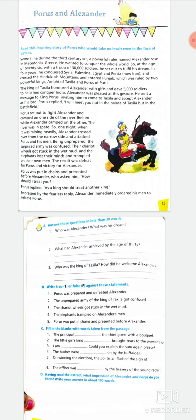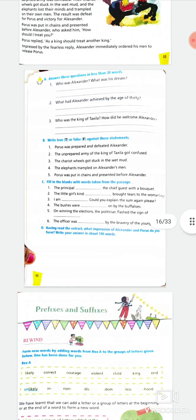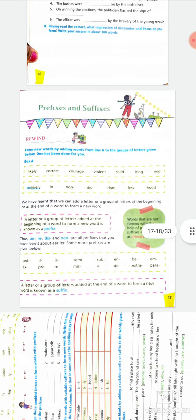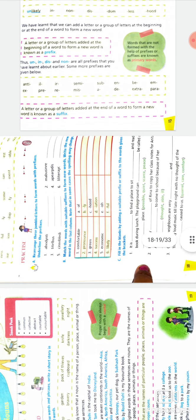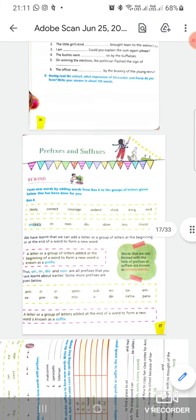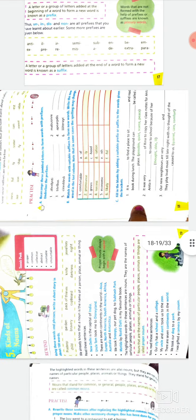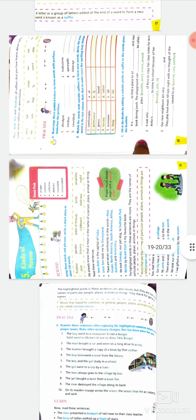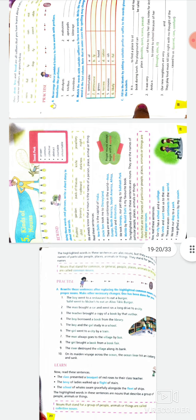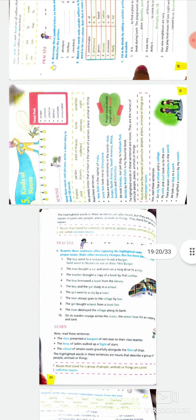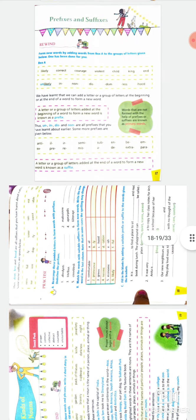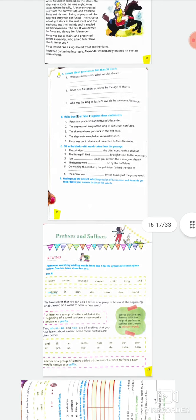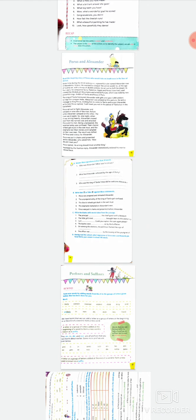Lesson five, 'Porus and Alexander,' is just a case study — you have to read the paragraph and answer the questions. We are done till the fifth lesson. All the best for your test! The next video will cover lessons five, six, and seven, but first make these four lessons perfect. See you tomorrow, bye!